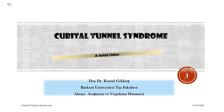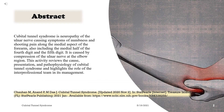Cubital Tunnel Syndrome: a brief video. Cubital Tunnel Syndrome is neuropathy of the ulnar nerve causing symptoms of numbness and shooting pain along the medial aspect of the forearm, also including the medial half of the fourth digit and the fifth digit. It is caused by compression of the ulnar nerve at the elbow region.